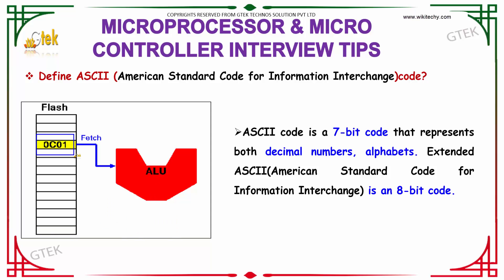You can see here the combination of decimal number and alphabets. Extended ASCII code is having a bit of 8-bit code.